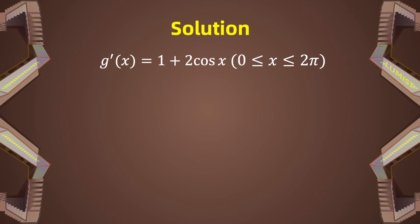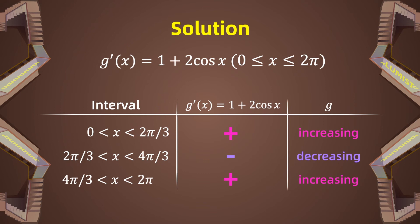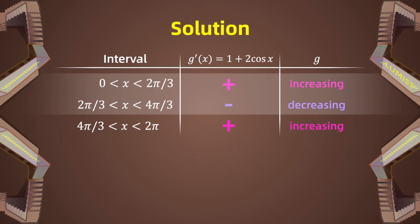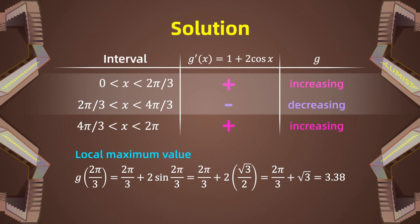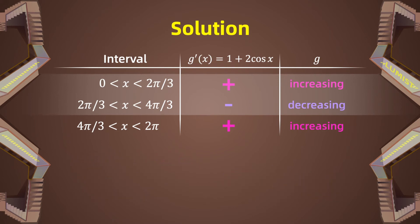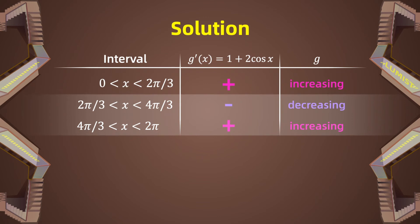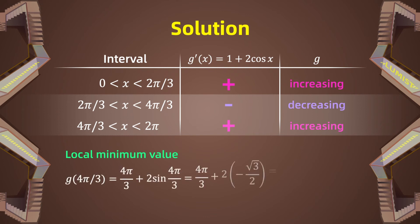Then we analyze g using the following table and find that it is increasing on the interval 0 to 2π/3, decreasing on the interval 2π/3 to 4π/3, and increasing on the interval 4π/3 to 2π. Since the derivative is greater than 0 on (0, 2π/3) and less than 0 on (2π/3, 4π/3), the local maximum value is g(2π/3), and the local minimum value is g(4π/3), which is approximately 2.46.